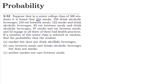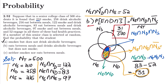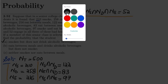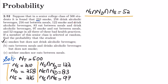If a member of this senior class is selected at random, we need to find the probability for each case. For part C, we have to find the probability of a student who neither smokes nor eats between meals.